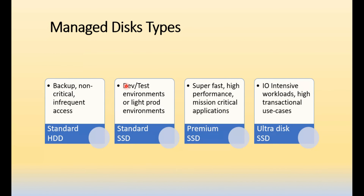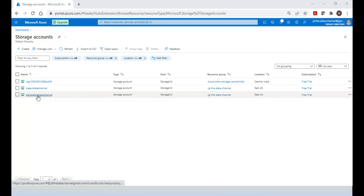Standard SSD is more expensive than Standard HDD. For production deployments with mission-critical applications where performance is really critical, you go for Premium SSD. The last option is Ultra Disk SSD, which is suited for I/O-intensive workloads — use cases where there are a lot of transactions, such as reading and writing to a database or file storage every second. For such transactional use cases, you choose Ultra Disk SSD.